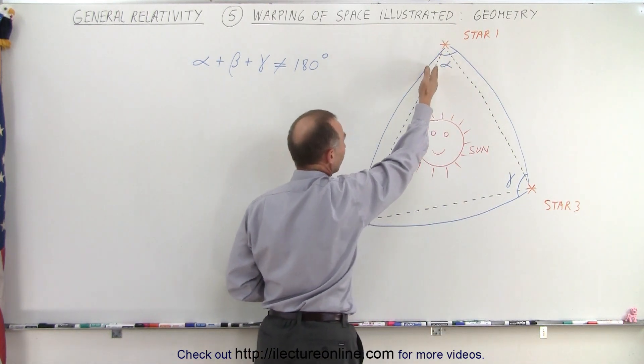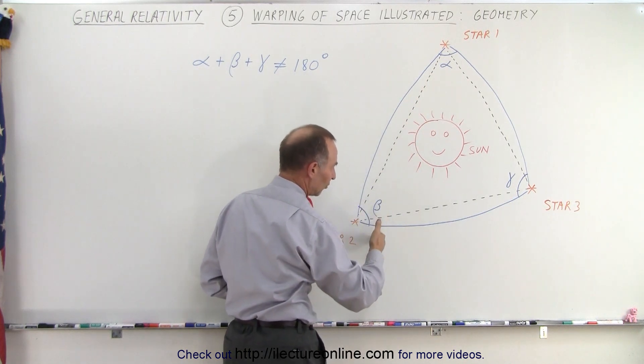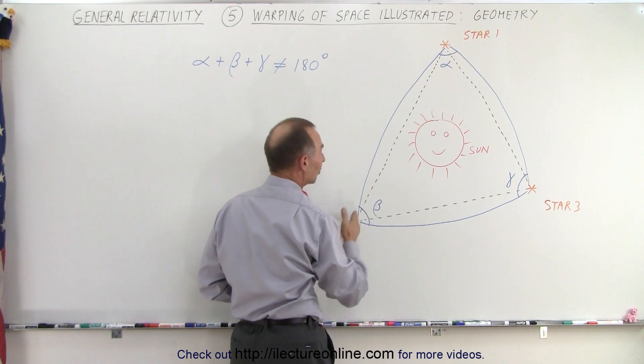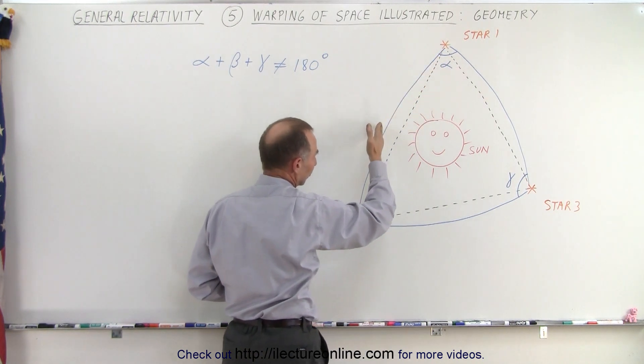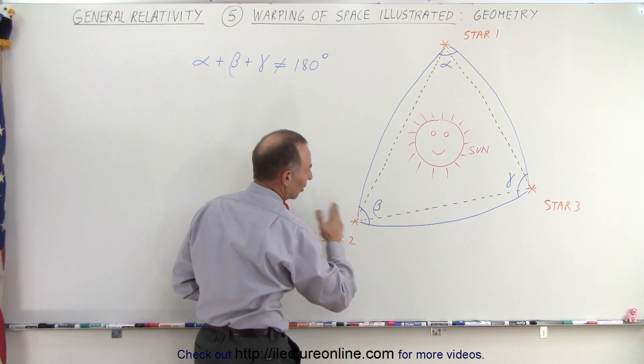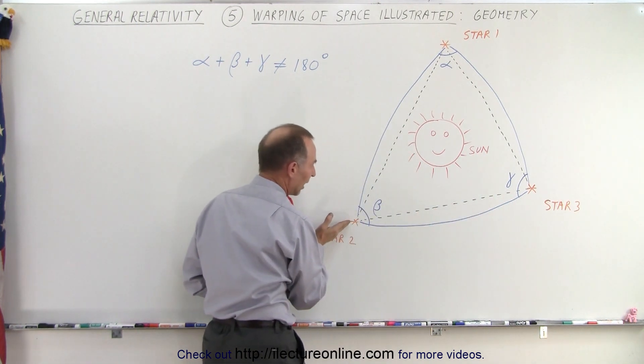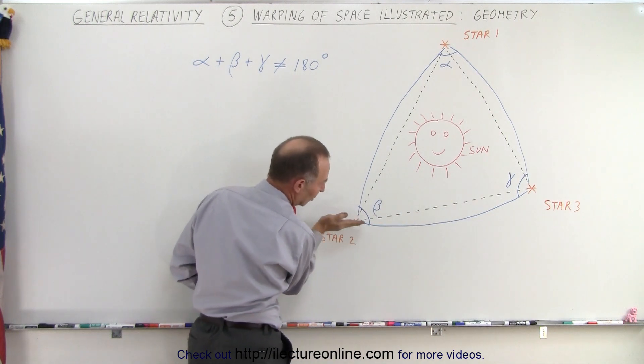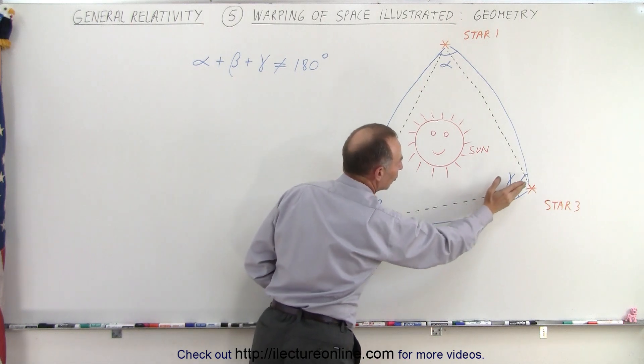Again, if the light were to travel in this direction, it's not going to reach the star. It's simply going to bend and miss the star. So for the light beam to reach this star, it has to be directed in this direction. And because of the curvature of space, it will eventually reach the star like that. Same from star 2 to star 3. Again, for the light to reach the star there, it has to be directed slightly away from this line so that the curvature of space will cause it to reach star 3.